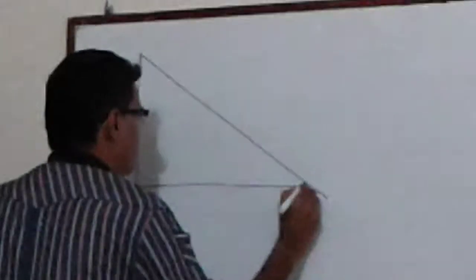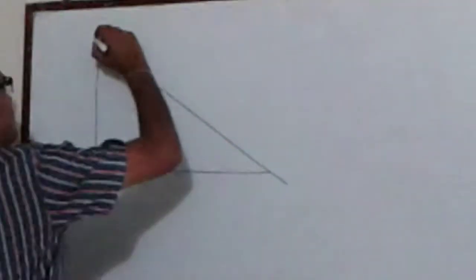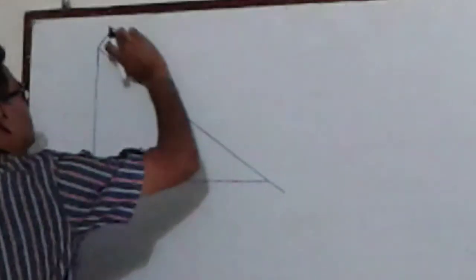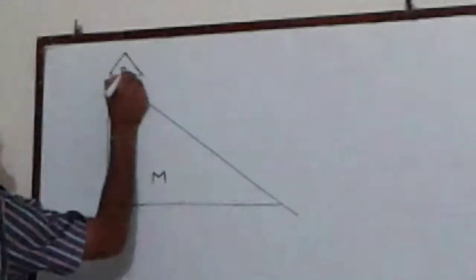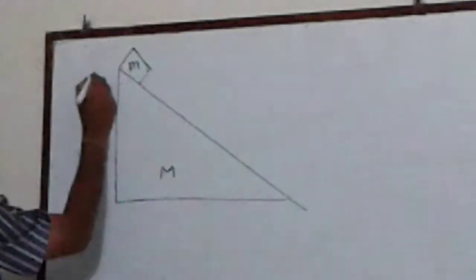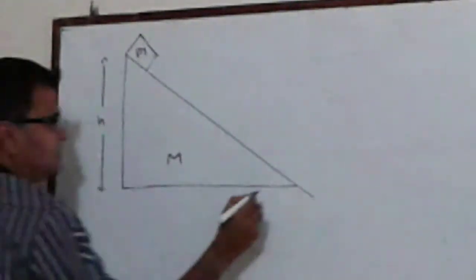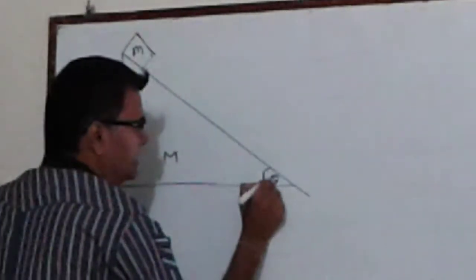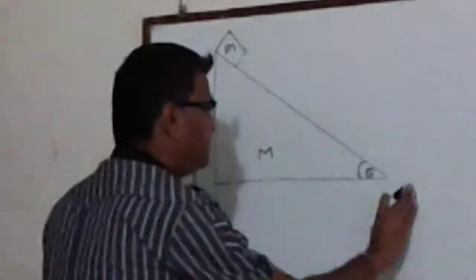This is a wedge whose mass is capital M, and on the top of the wedge we have a small block whose mass is small m. The height of the wedge is h and it makes an angle theta with horizontal.